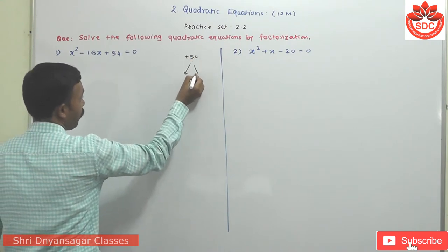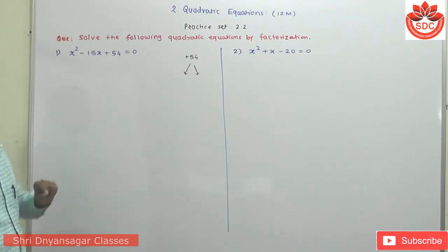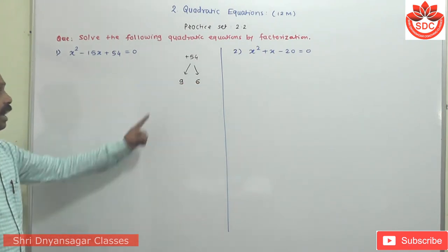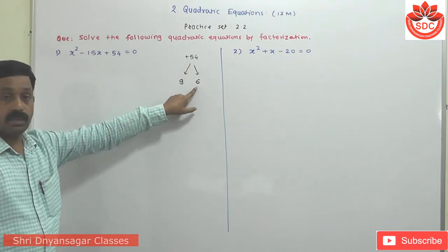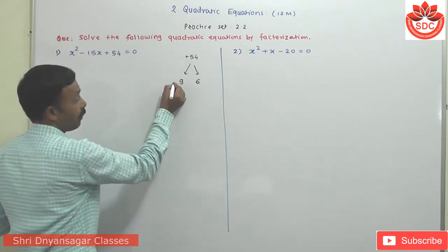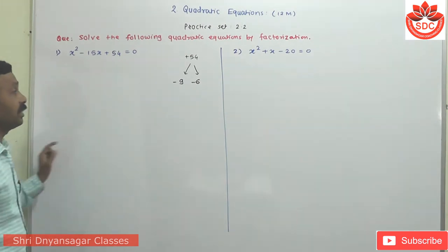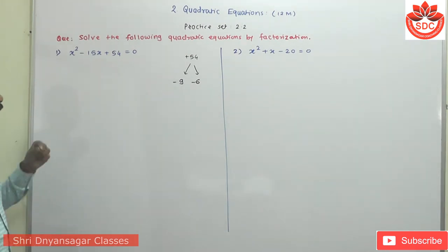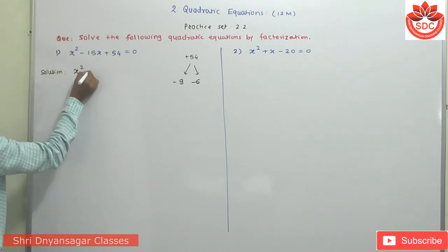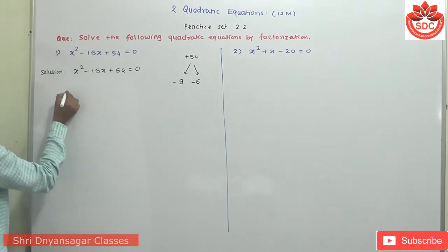Find the factors of +54 such that their addition equals the middle term, -15. The factors 9 and 6 give 9 × 6 = 54, and 9 + 6 = 15. But we need -15, so use both with minus signs: -9 and -6. Minus × minus = plus, and their addition becomes -15. This is the correct factorization. So we write it as X² - 9X - 6X + 54 = 0.